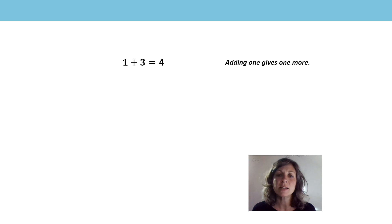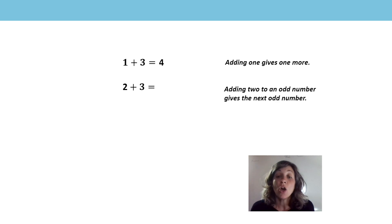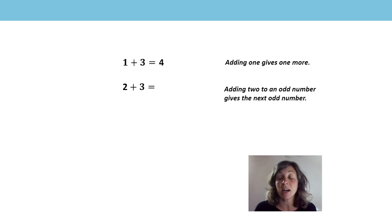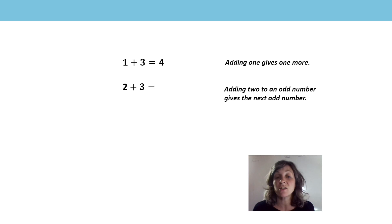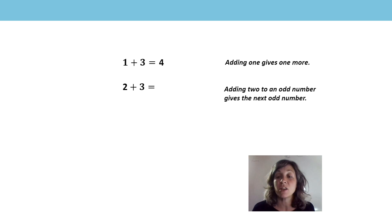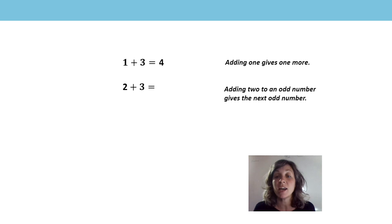Now let's have a look at the next one: 2 plus 3. We've done adding 2. We know that when we add 2 to an odd number it gives us the next odd number. So I can just switch the addends around, and that means it will be the next odd number after 3, which is 5.